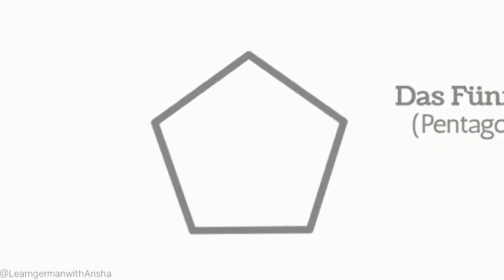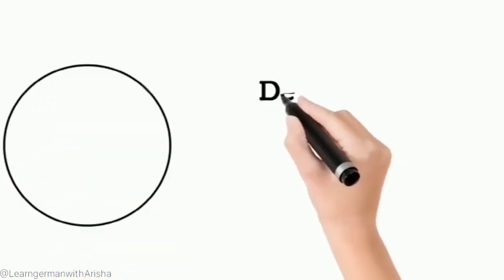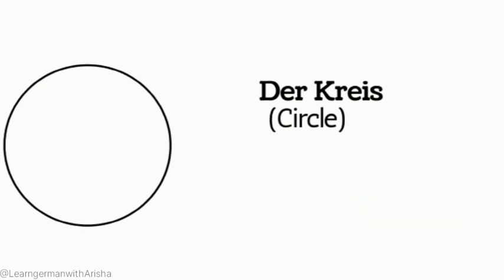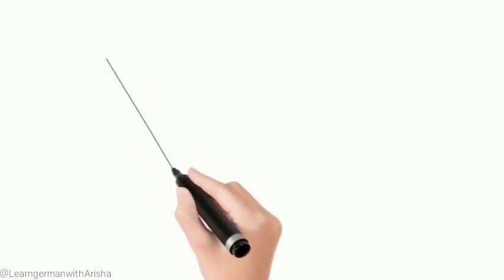Then our fifth one is circle, der Kreis. Then our sixth one is triangle, das Dreieck.